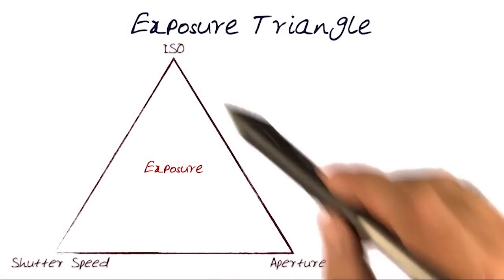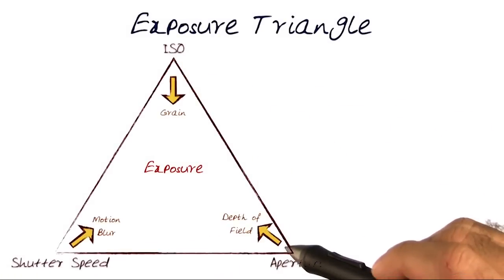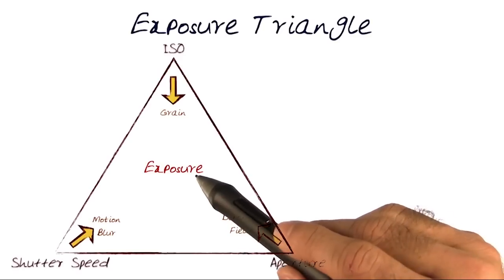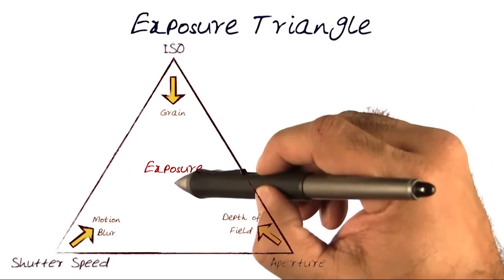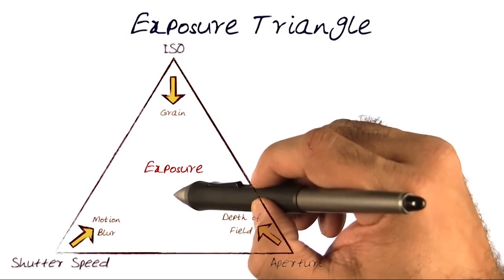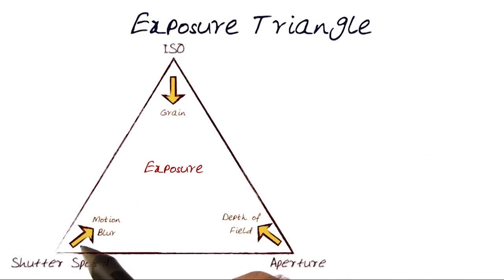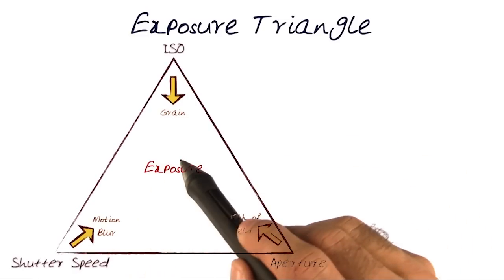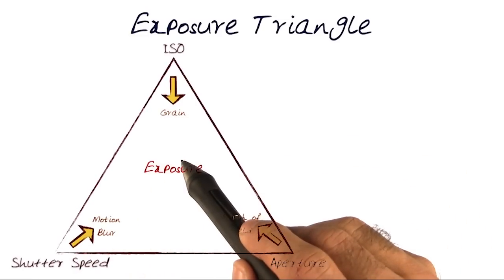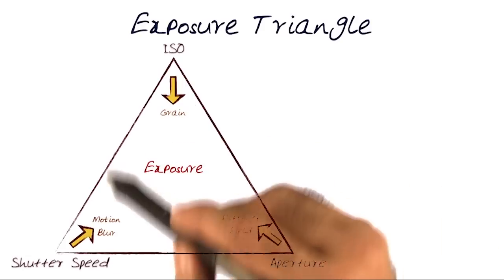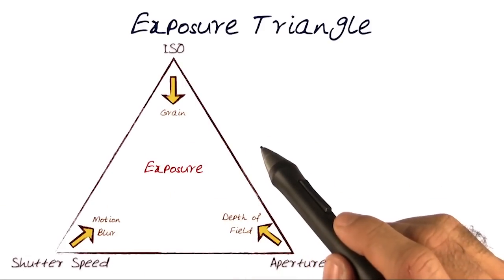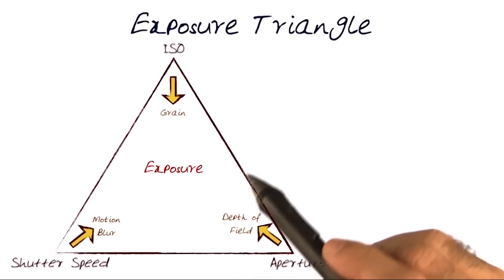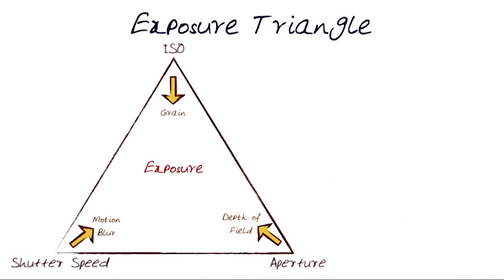This is the exposure triangle: shutter speed, aperture, and ISO. By changing the aperture we can get an impact on depth of field. Increasing ISO gives us more grain. And decreasing the shutter speed gives us motion blur. So it's a combination of these three things that allows you to explore how to best take the pictures you want.